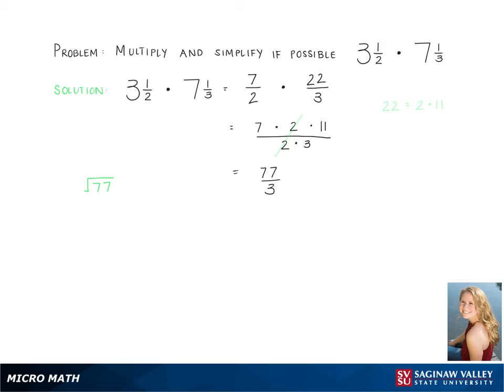Now we are going to perform long division to change this improper fraction back into a mixed number. We can say that 3 and 1 half times 7 and 1 thirds is equal to 25 and 2 thirds. And this is our final answer.